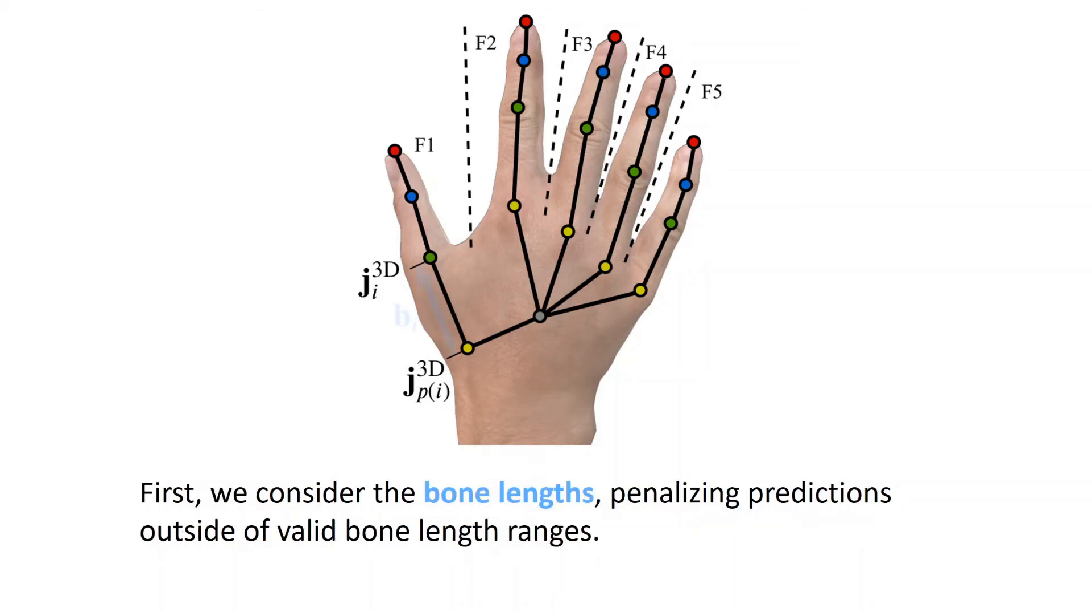First, we consider the bone lengths, penalizing predictions outside of valid bone length ranges.